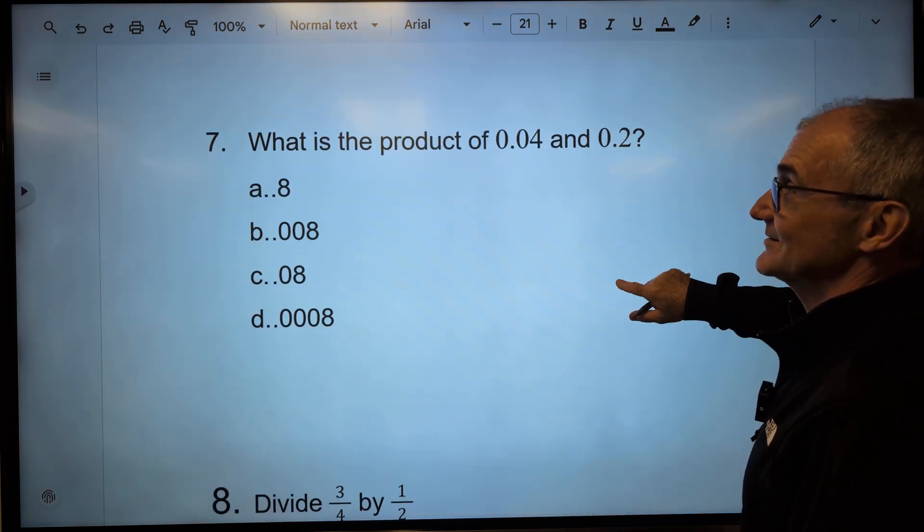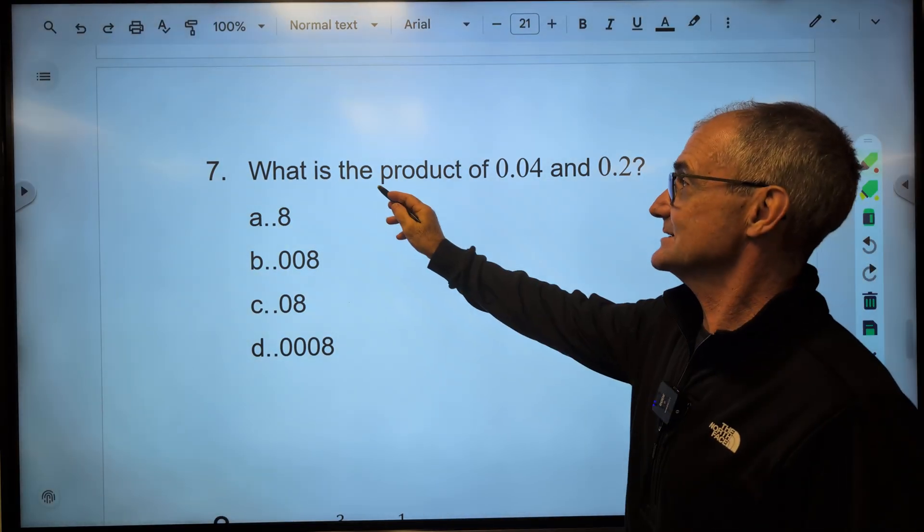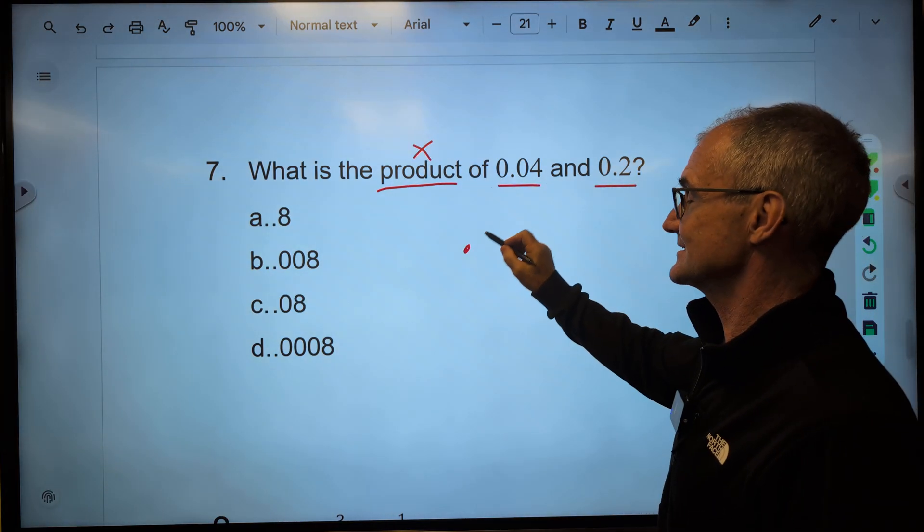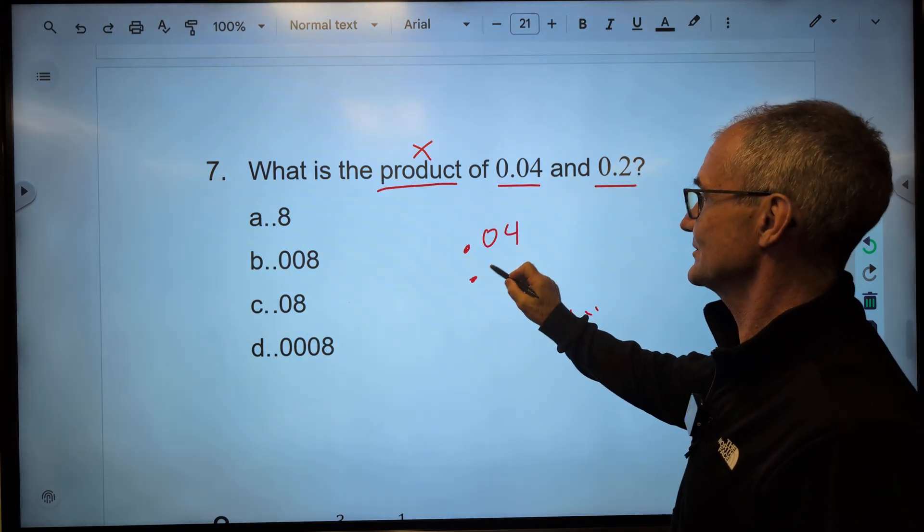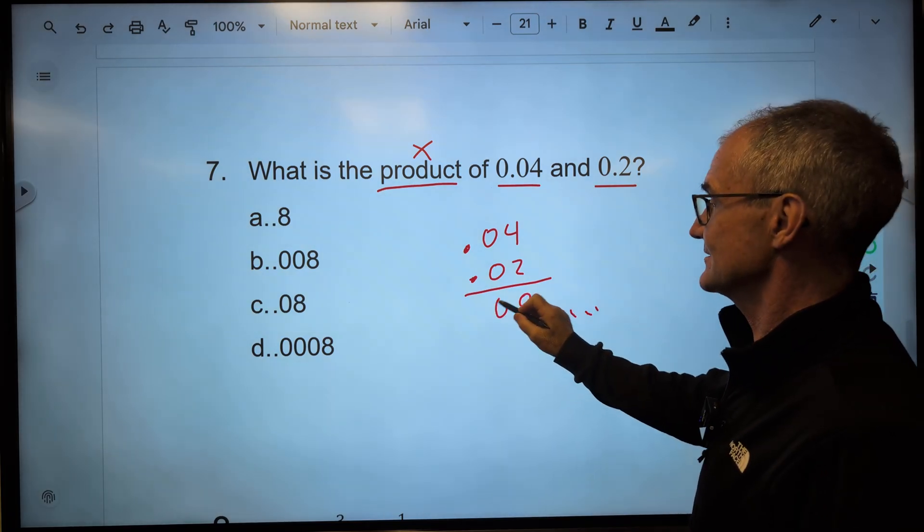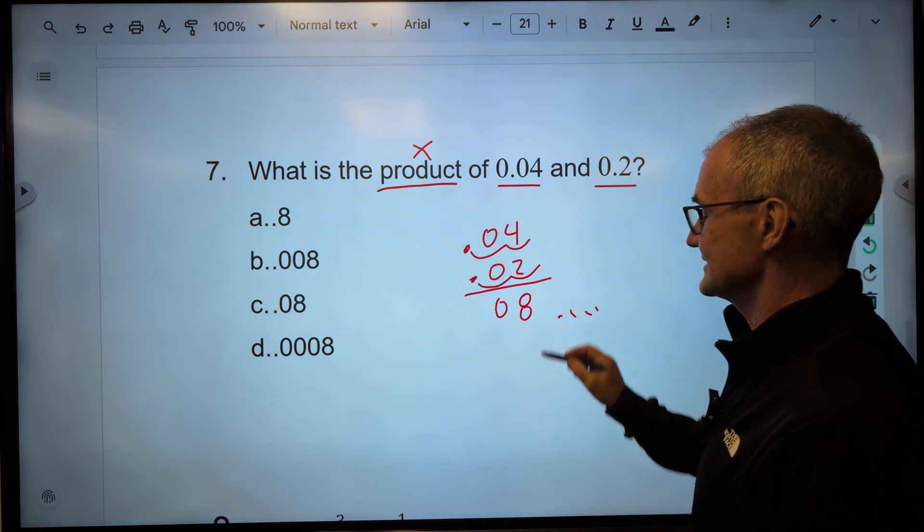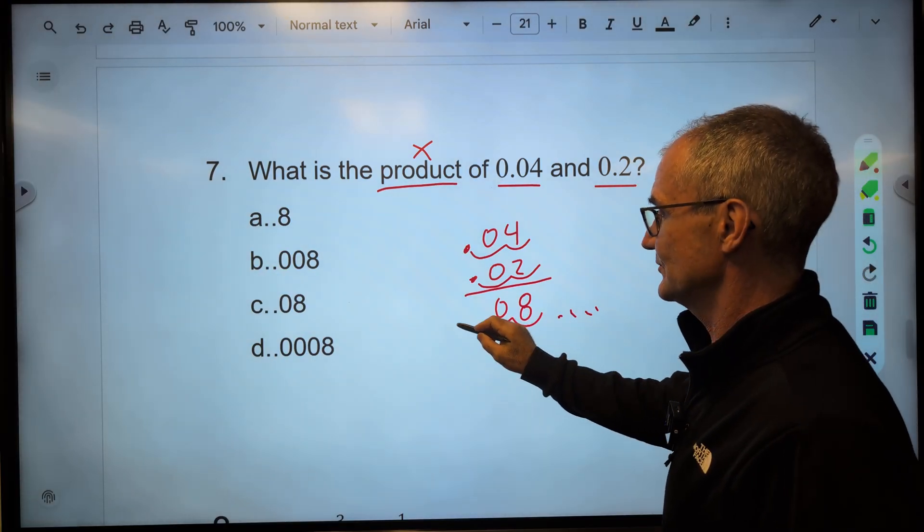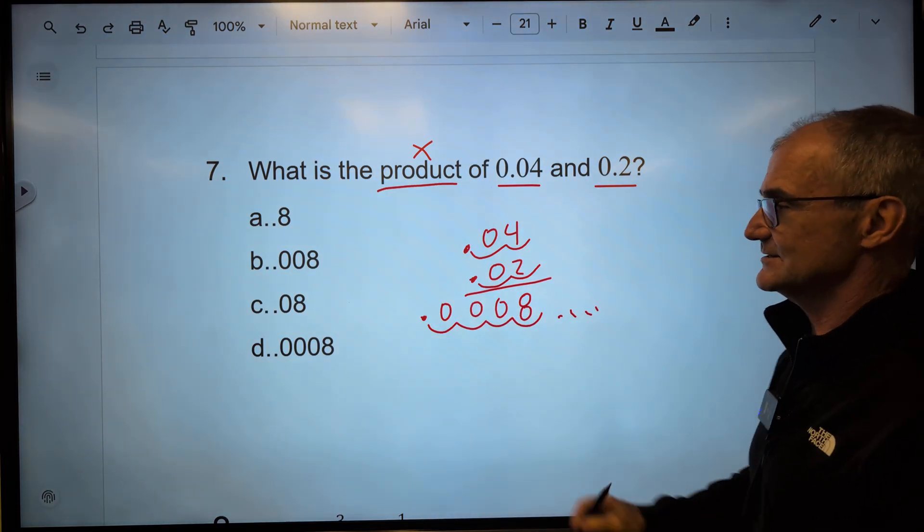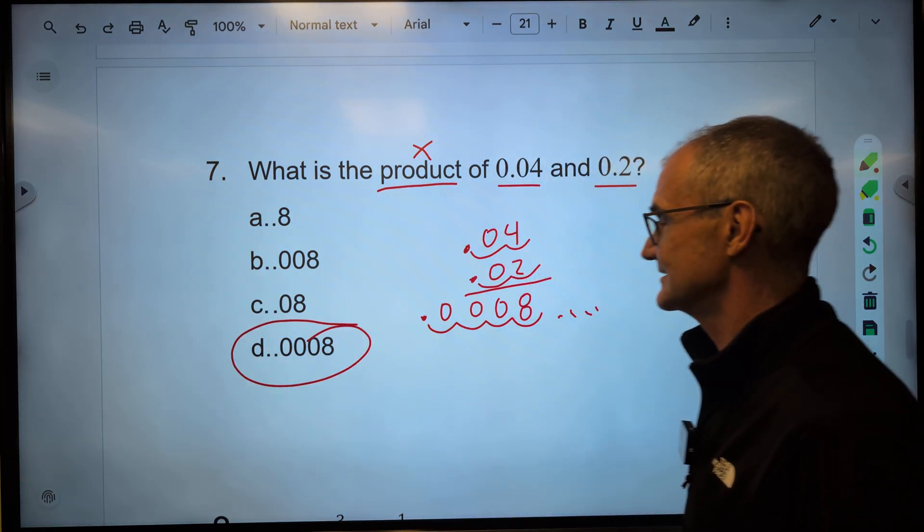Moving right along, keeping track of our scores here. What is, again, pause it, give it a try. What is the product of this and this? Product means to multiply. This one I'm actually going to write out so I don't make any mistakes on it. 0.04 times 0.02. 2 times 4 is 8. And then I have zeros all along. Then I've got to count out 1, 2, 3, 4. So my decimal place is over 1, 2, 3, 4. So this is 0.0008. Correct answer, answer D right there.